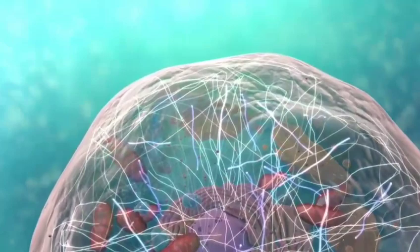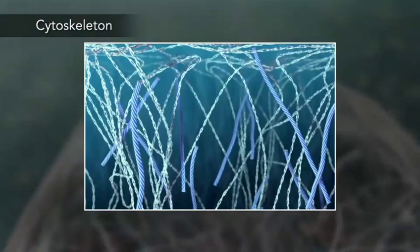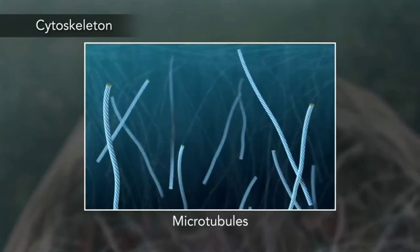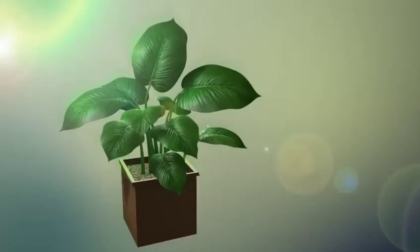Meanwhile, the cell maintains its shape through a cytoskeleton. The cytoskeleton includes the thread-like microfilaments, which are made of protein, and microtubules, which are thin, hollow tubes.